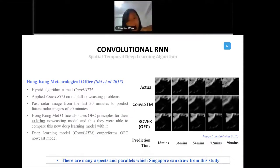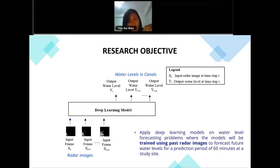There are actually many parallels which Singapore can draw from this study. We wanted to test on this ConvLSTM algorithm for us. What we wanted to do is we want to construct a deep learning model which takes in radar images of past 30 minutes, and then we want to predict water levels in the canals. This is essentially the whole objective of it. If I were to move on to the previous slides that I have, what we intend to do is we actually intend to bypass all this.